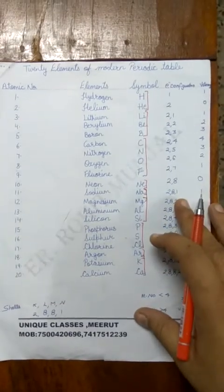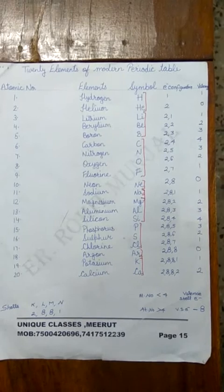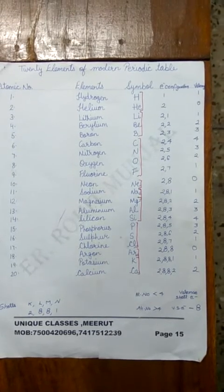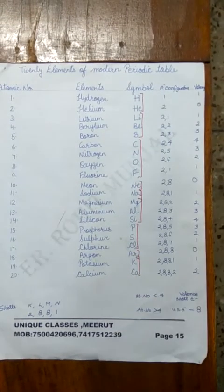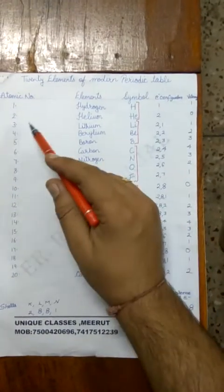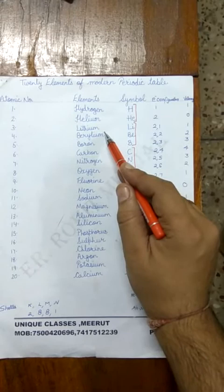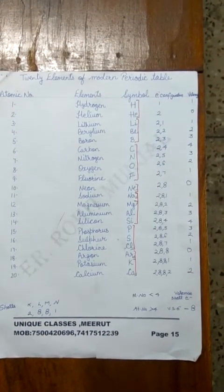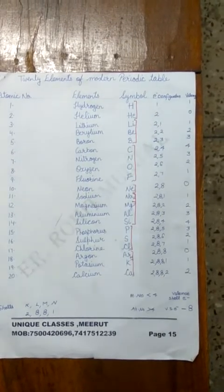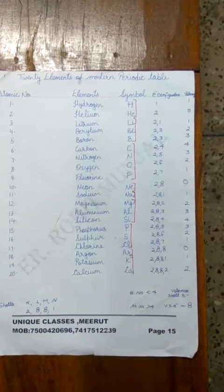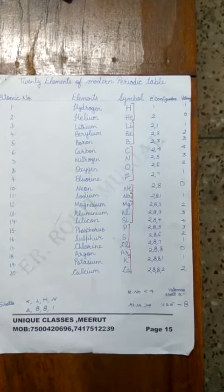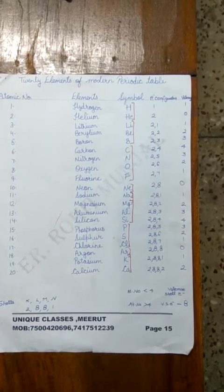Hello friends, in our last video we studied about the first 20 elements and learned their names in serial order. Now we will study about valency — how to find the valency of an element. Here we have written the atomic numbers, the elements, and their symbols. Atomic number is just like a roll number, and it is equal to the number of electrons in an element.